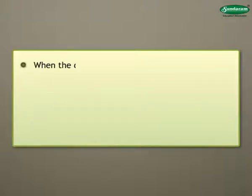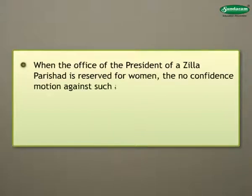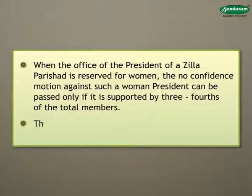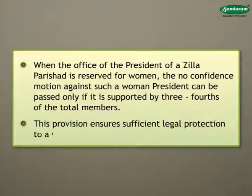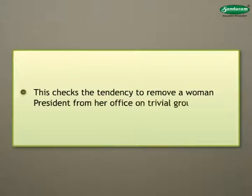When the office of the President of a Zilla Parishad is reserved for women, the no confidence motion against such a woman president can be passed only if it is supported by three-fourths of the total members. This provision ensures sufficient legal protection to a woman president and checks the tendency to remove a woman president from her office on trivial grounds.